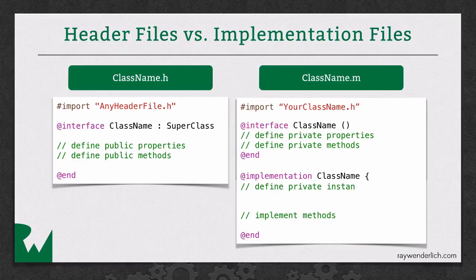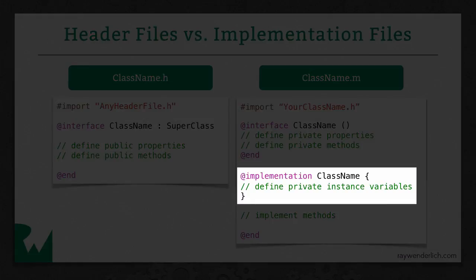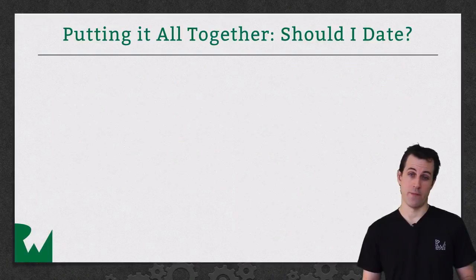One more thing I want to show you. You can actually define private instance variables inside your class if you'd like. You put an open curly brace after your implementation's class name, and then you can list out your private instance variables here. For example, an int, myint, or a char, mychar could go here. Again, we'll cover the difference between instance variables and properties in the next video.